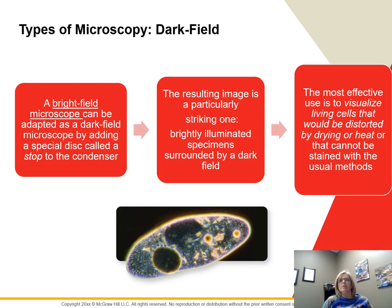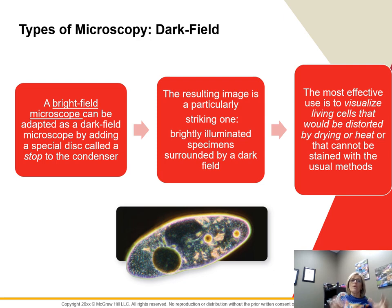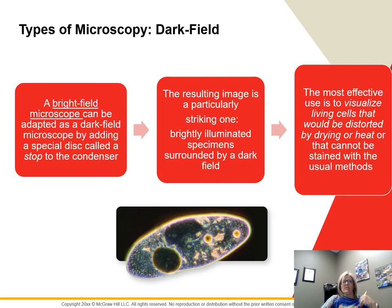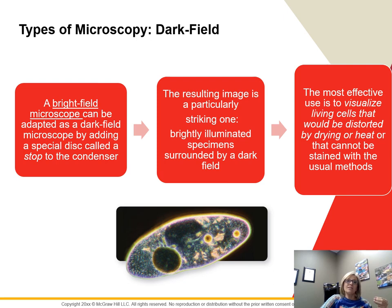We can convert a bright field to a dark field microscope by adding a special disk called a stop to the condenser. This blocks all light from entering the objective lens except for peripheral light reflected off the sides of the specimen itself, giving a brilliantly illuminated specimen against a dark field. This is the most effective way to visualize living cells that would be distorted by drying, heat fixing, or other staining methods. Focus on two things: how it works and what we use it for.